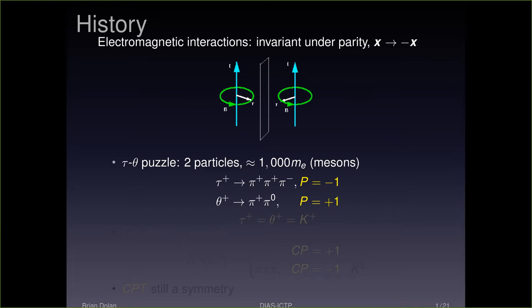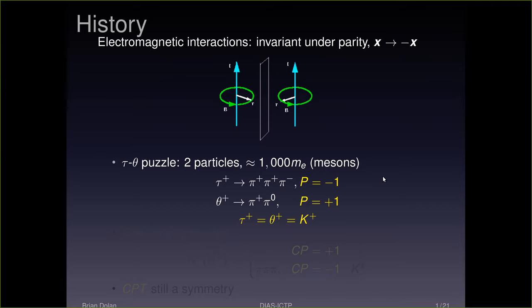That led Lee and Yang to question parity. Lee and Yang realized that conservation of parity had not been checked in weak interactions. Famously, they suggested an experiment that went on to find parity violation. The answer to the tau-theta puzzle is that the tau and theta are actually the same particle — what we now call a kaon, a K-plus — but the decays, which are weak decays, simply violate parity.